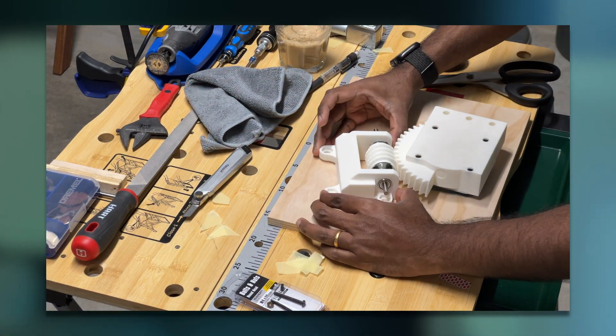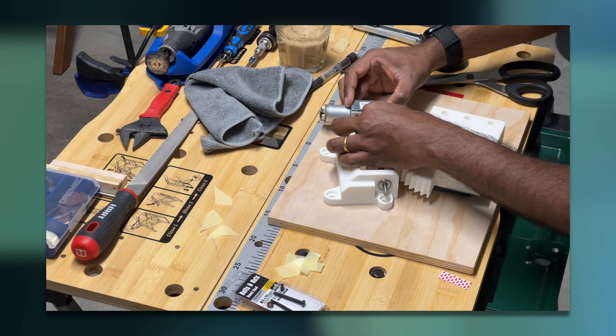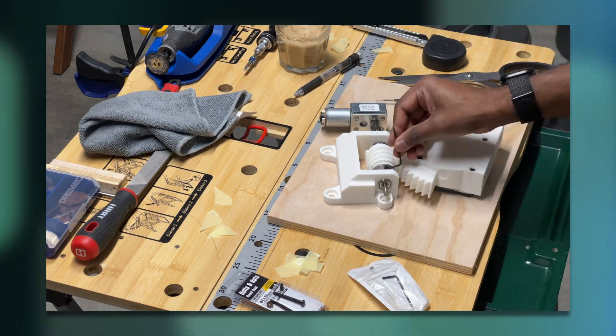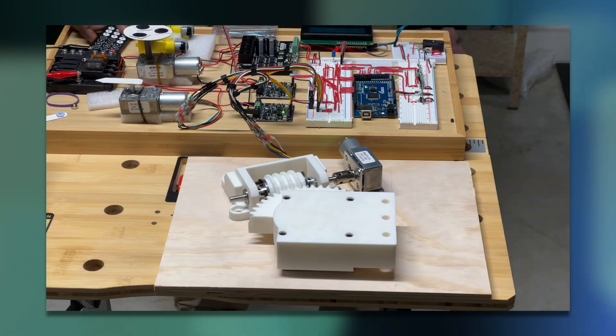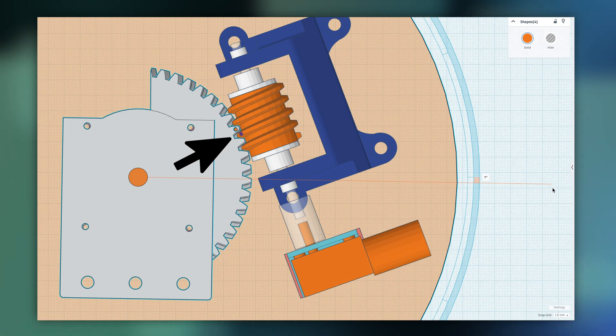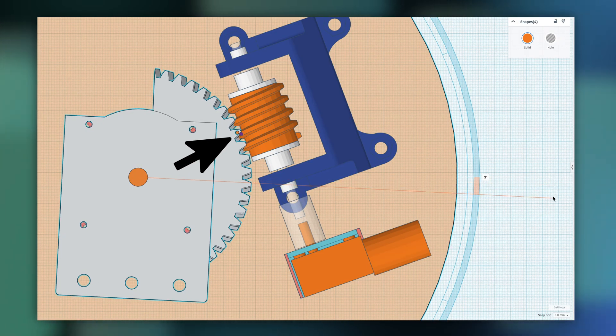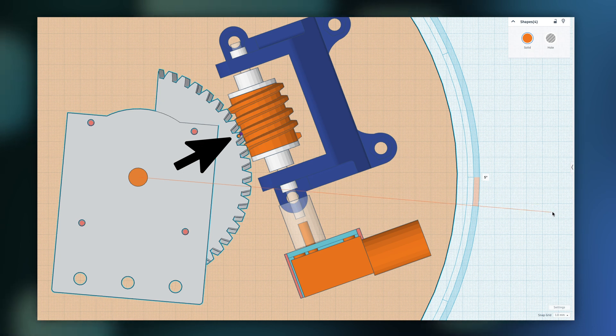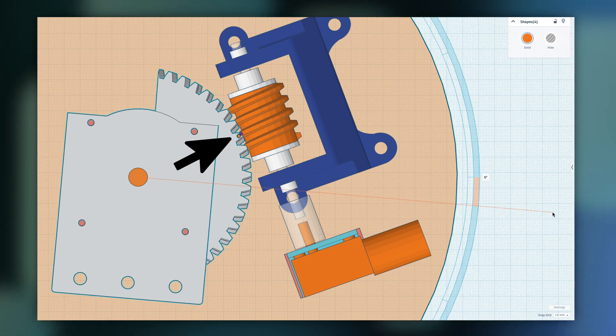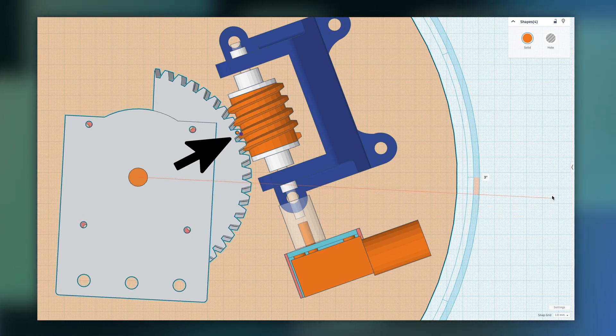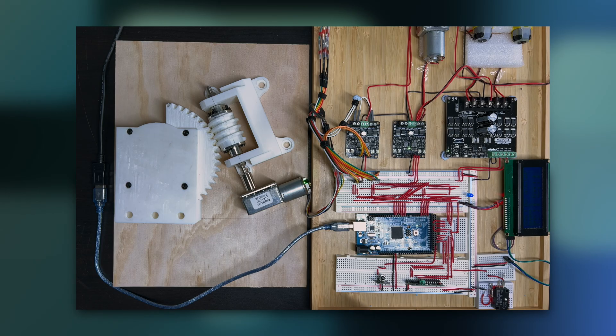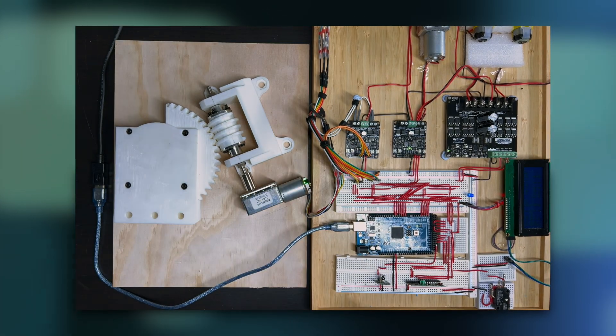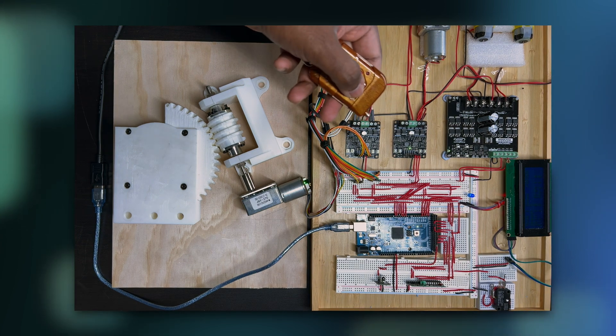The code I wrote initially assumed a 1 to 1 ratio between the motor's rotation and the module's rotation. But using gears meant I had to revise that. The base plate has 48 teeth in total, and I wanted to move it in 6 degree increments. This meant I needed to move 0.8 of a tooth to achieve a 6 degree movement. But then I had to figure out how much the worm gear had to rotate to achieve the 6 degree movement on the base plate.